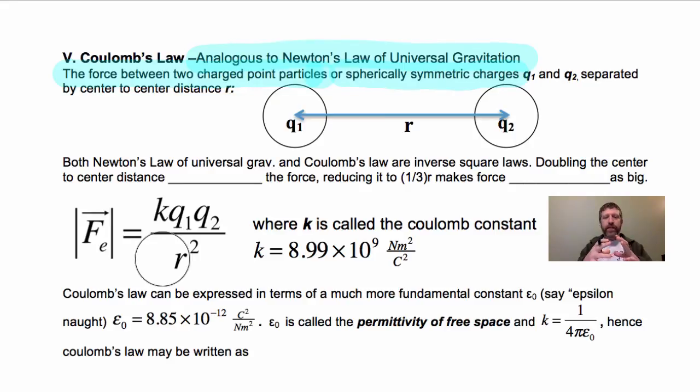Spherically symmetric means that the charges are set up so that no matter which side of the sphere you look at, it looks the same. We'll call these two charges Q1 and Q2. They are separated by a center-to-center distance R. R is not necessarily the radius, it's a center-to-center distance.